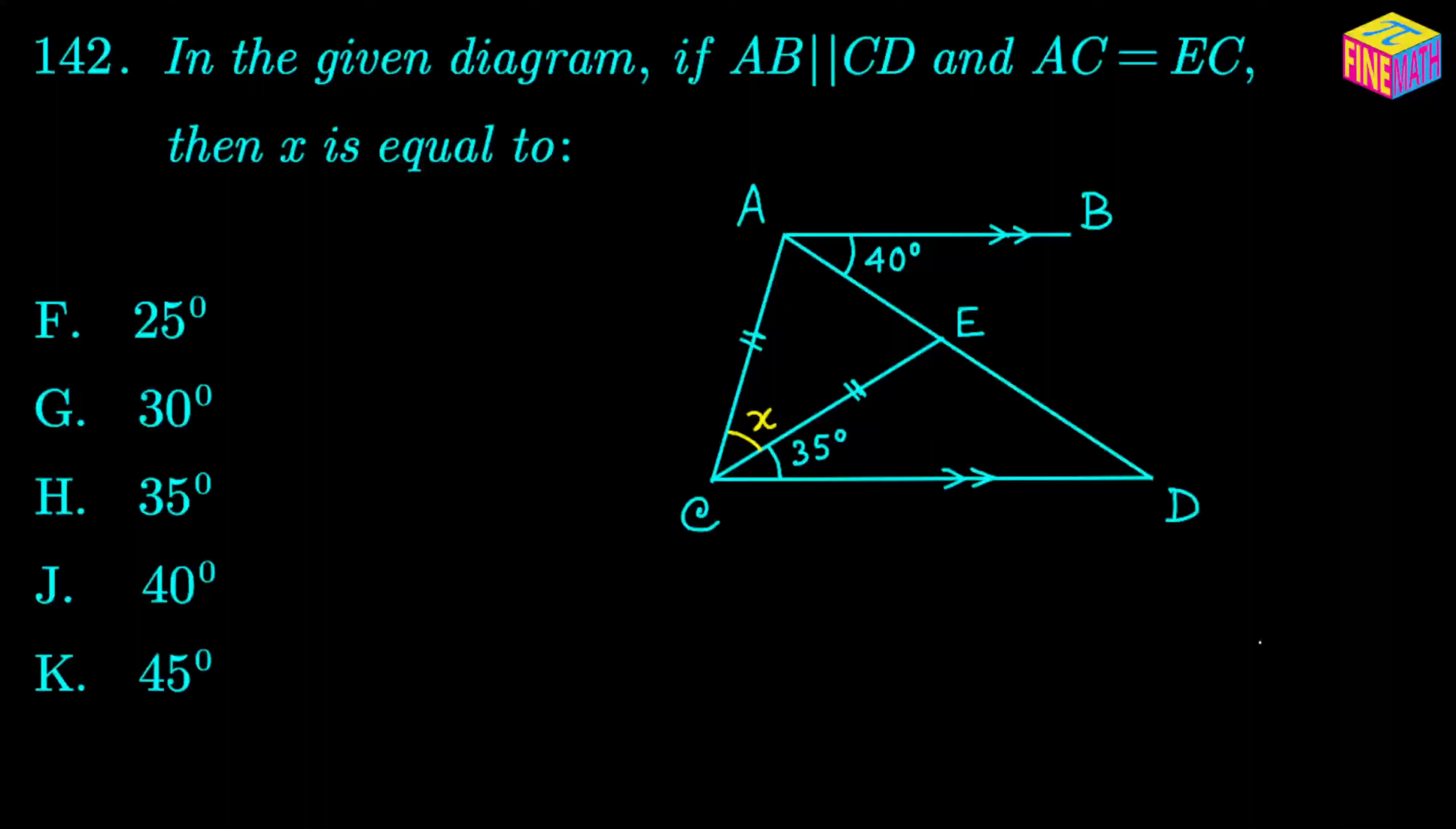So here in the question there are two vital pieces of information. One is that the line segment AB is parallel to line segment CD, so that is one piece of very important information. And then also AC is equal to EC, that is another important piece of information which we are going to need to solve this problem.